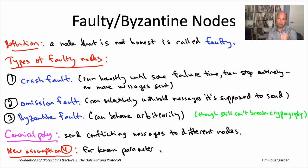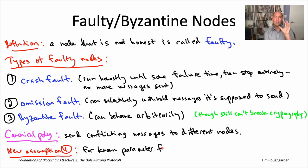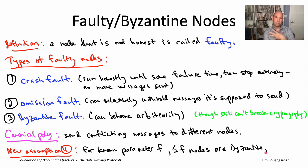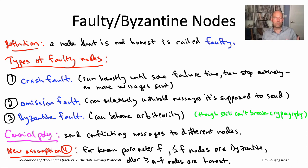So the new version of assumption four — the old version was that all nodes are honest — the new version is that at least a certain number of the nodes are honest. There's going to be a parameter little f, an integer between zero and little n. F is the largest number of faults we want to protect against. Our new assumption is that there's going to be at most f faulty Byzantine nodes, and at least n minus f honest nodes. The previous version of assumption four corresponded to f equals zero — now we're going to allow f's that are non-zero, which is a weaker assumption making our life more difficult.